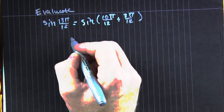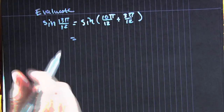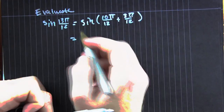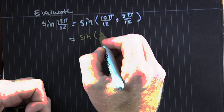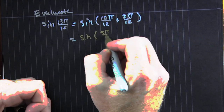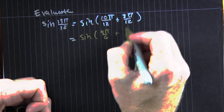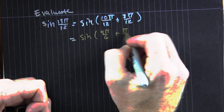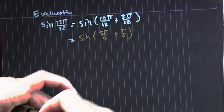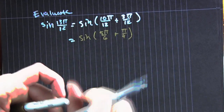Looks like 13 is 10 and 3, and both of those are over 12. Reduce them — that looks familiar. Looking good. Now what?